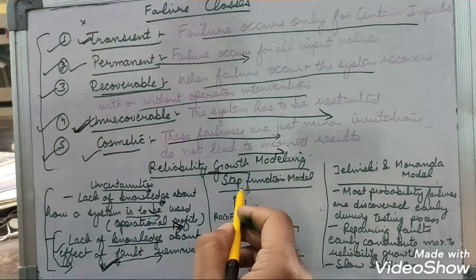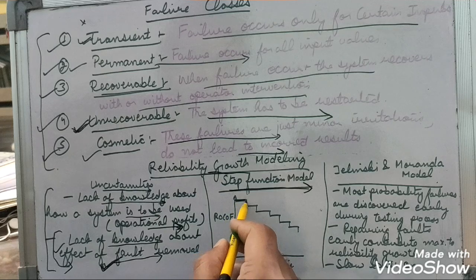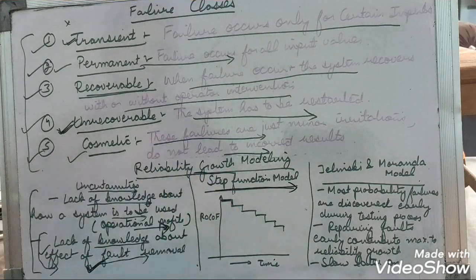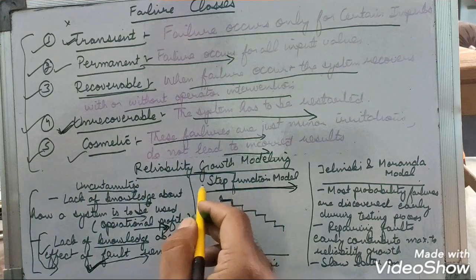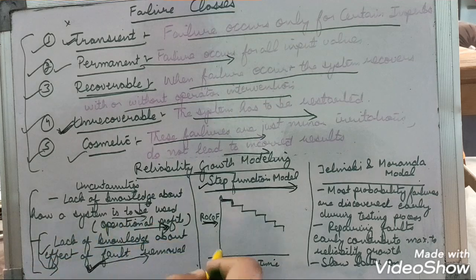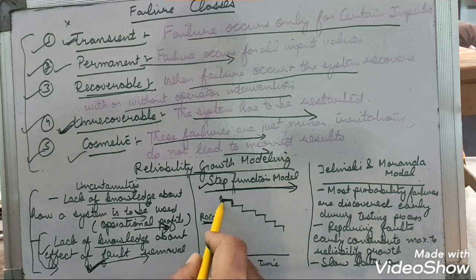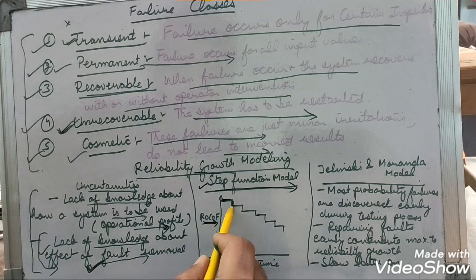Now we'll discuss some reliability growth models. The first is the step function model, which is the most basic model. It assumes there is a constant increase in reliability with each fault removal. On the y-axis we have the rate of occurrence of failure, and on the x-axis we have time.